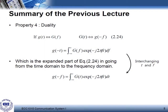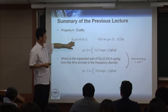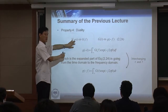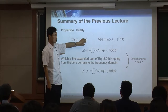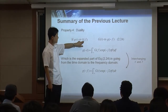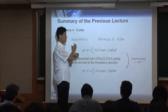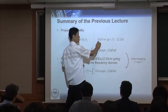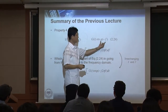There are many properties but we will review only the important ones. Property 4 is duality. We have a time-domain rectangular signal; taking the Fourier transform gives a sinc function in frequency. Based on duality, if we swap these two — making the time domain signal a sinc function — then in the frequency domain we get a rectangular signal.